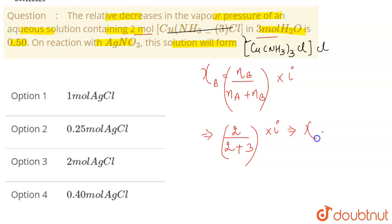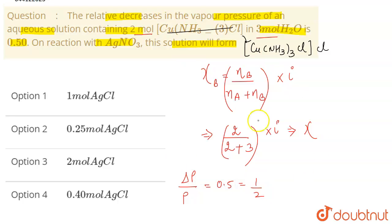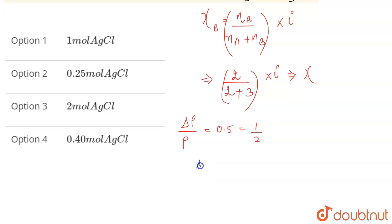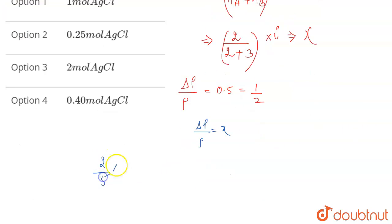This gives us the mole fraction x. We are also given the relative lowering in vapor pressure, that is ΔP/P, where ΔP is the vapor pressure of the pure solvent minus the vapor pressure of the solution. This ΔP/P is given as 0.5, which is 1/2. The relative lowering in vapor pressure equals the mole fraction, so 2/5 × i = 1/2.